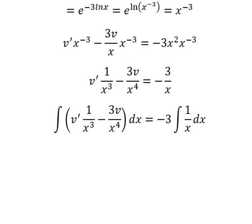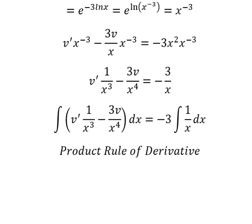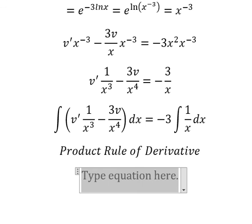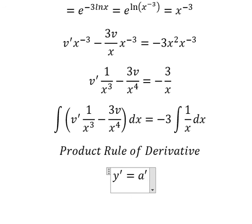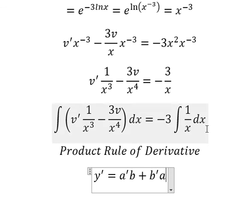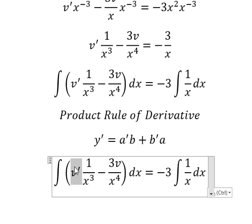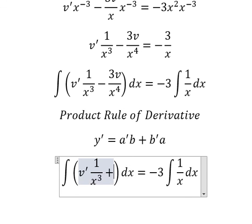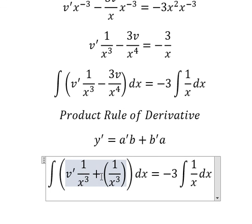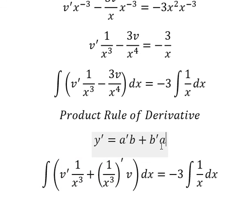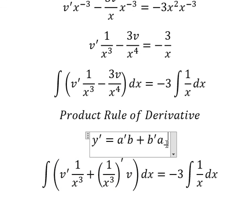Next we can use the product rule of the derivative. So we have the first derivative of y equals the first derivative of a times b, plus the first derivative of b times a. This one is the first derivative of a times b, and this one is the first derivative of b times a. So the integral of this side gives us v over s to the power of 3.